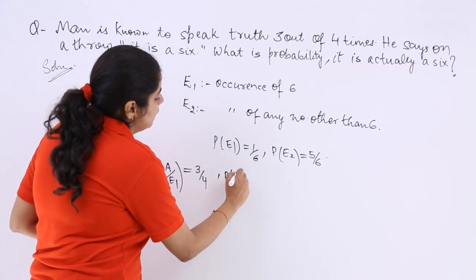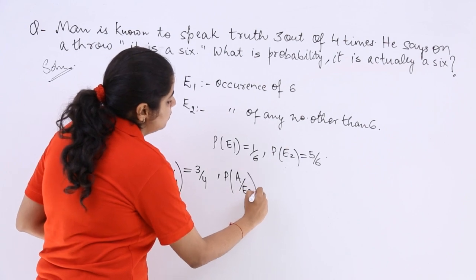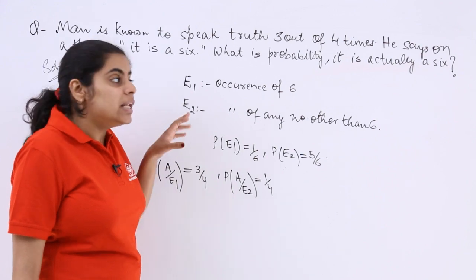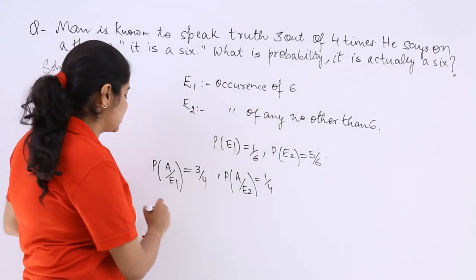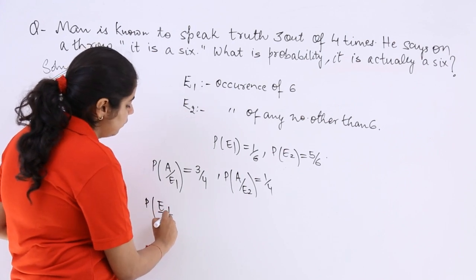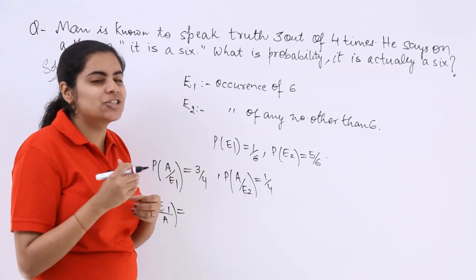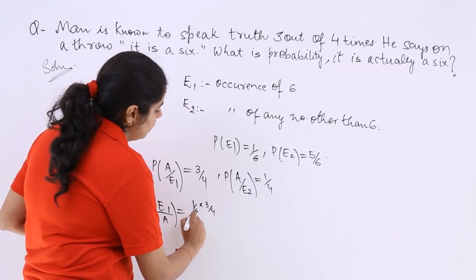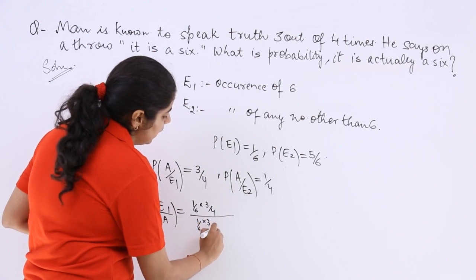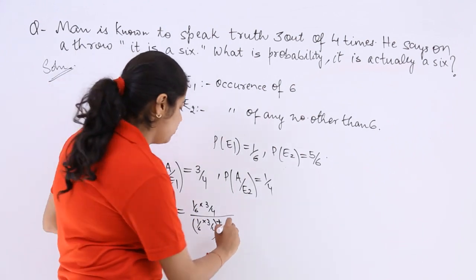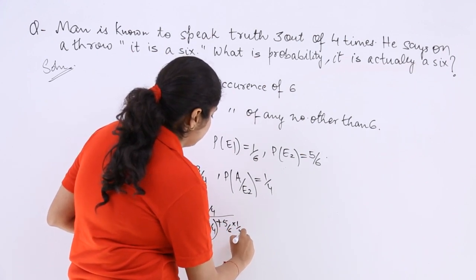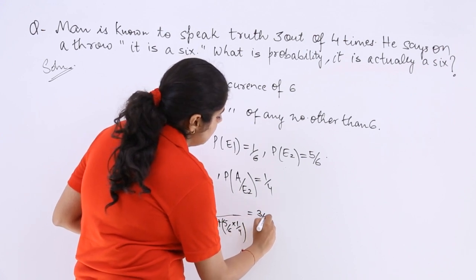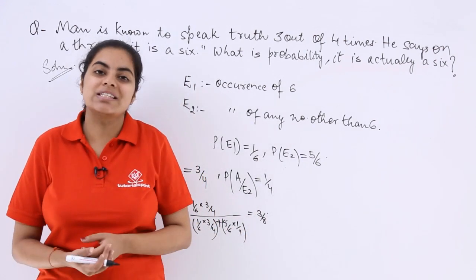The probability that 6 has not occurred but he did not speak the truth is 1 − 3/4, which is 1/4. Now to find P(E1|A), we apply Bayes' theorem: it is (1/6 × 3/4) divided by (1/6 × 3/4 + 5/6 × 1/4). The answer works out to 3/8, which is the final answer to this question.